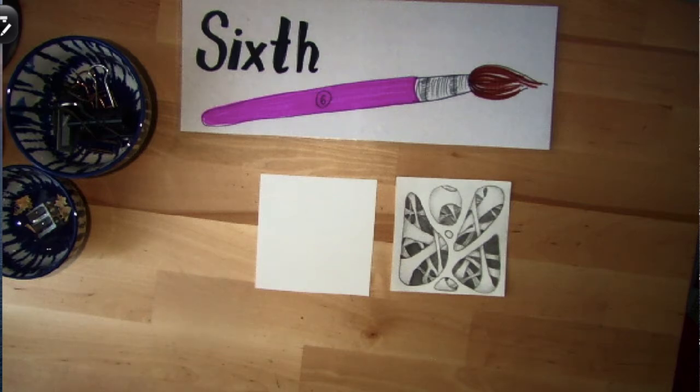So we're going to be working on a new project. We did a lot of line work, we did a lot of work with colors, so we're going through the elements of art and doing a project for each. In the beginning we did lines, then we did color for the analogous colors. Now we're going to jump into value.